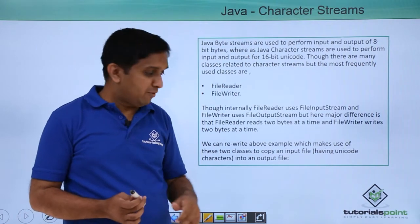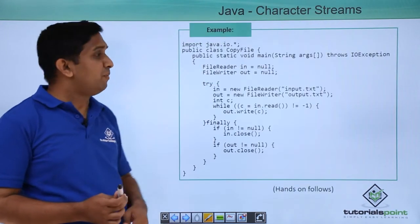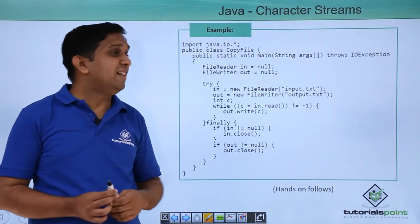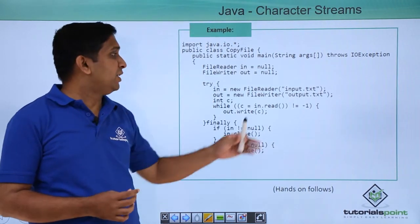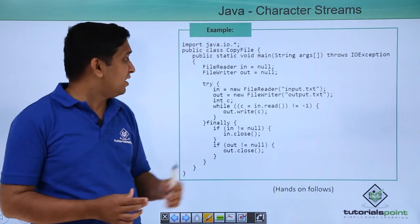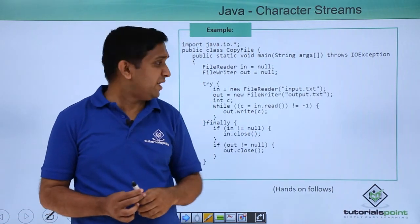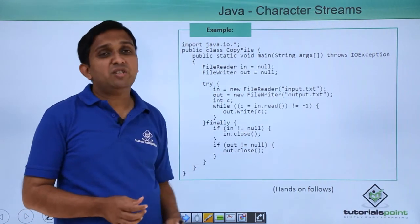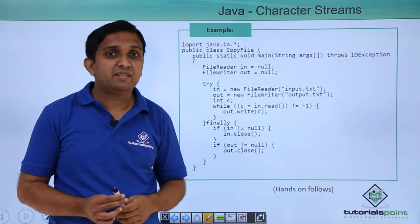So the program that we have implemented copying one file into another file is again implemented using FileReader and FileWriter. Now input.txt is a file which is given to the FileReader constructor and one object is created which is in object. Out object is created and output.txt is given to the constructor of that class.